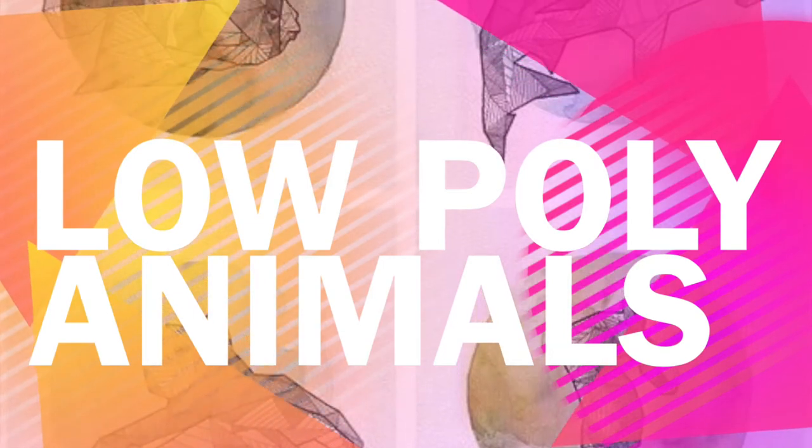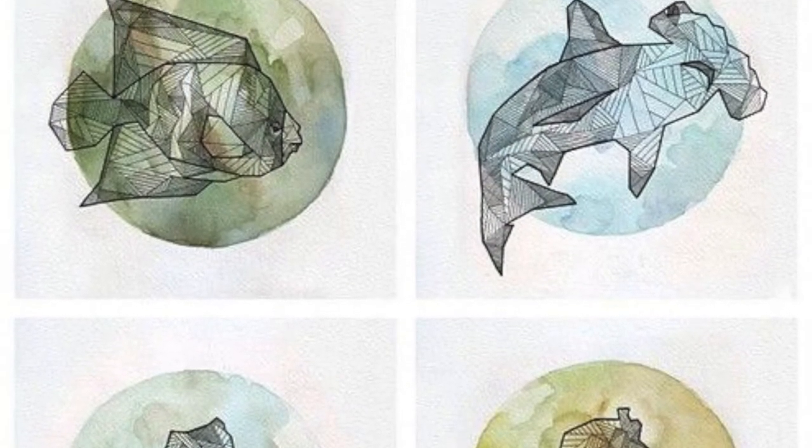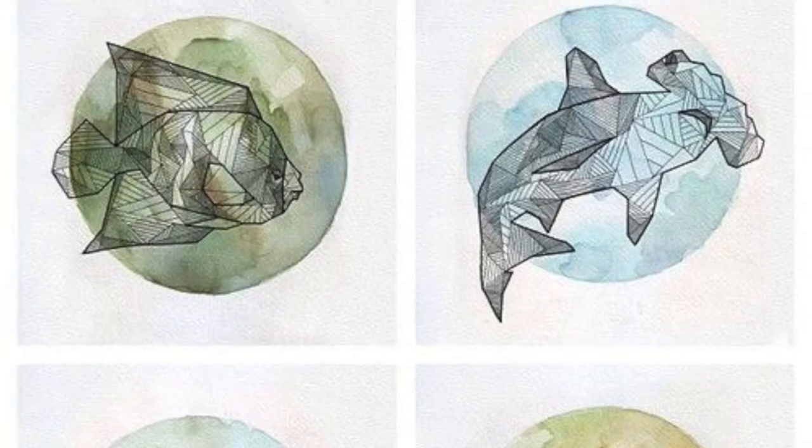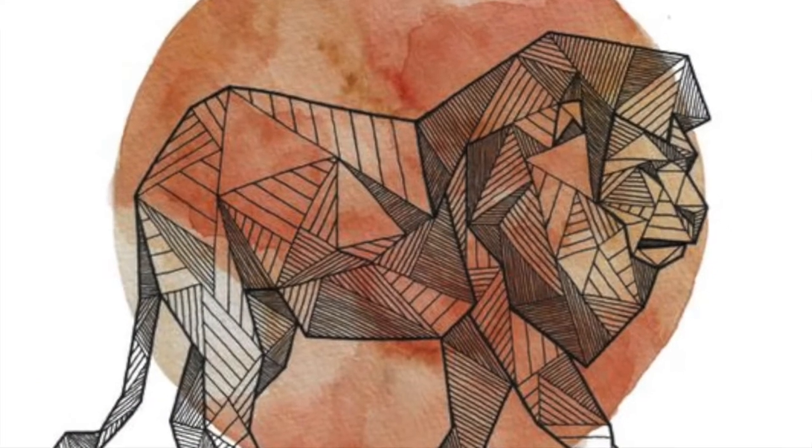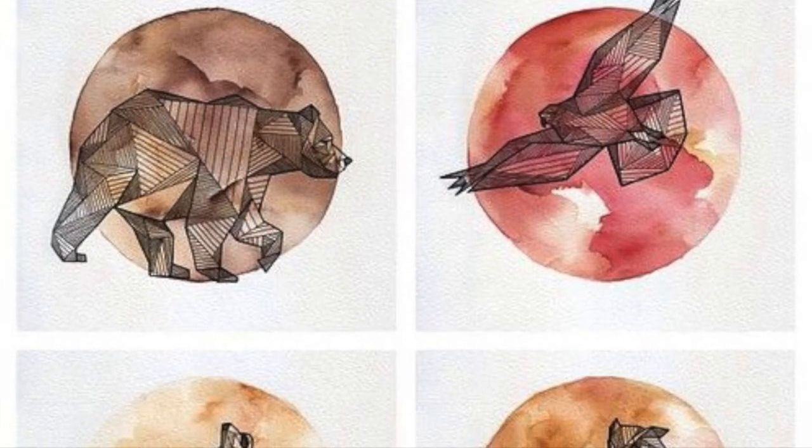For our project we will be creating low-poly animals inspired by the artist Allison Kuhneth. Low-poly design is created with a triangular grid usually used for computer and digital graphics. You might notice this sort of structure when playing video games or using a Snapchat filter.